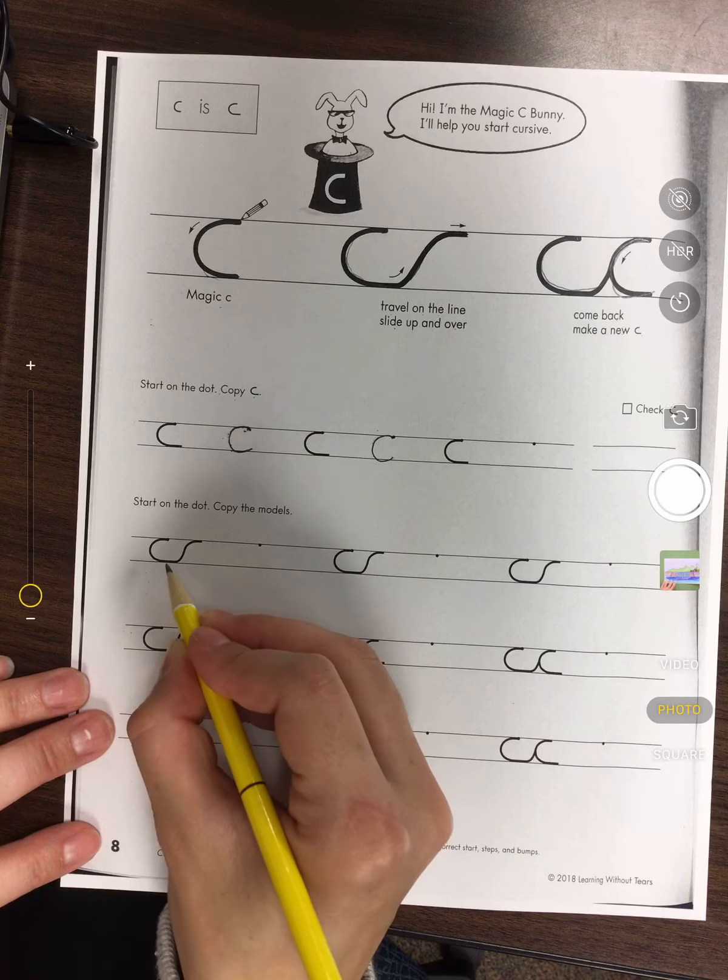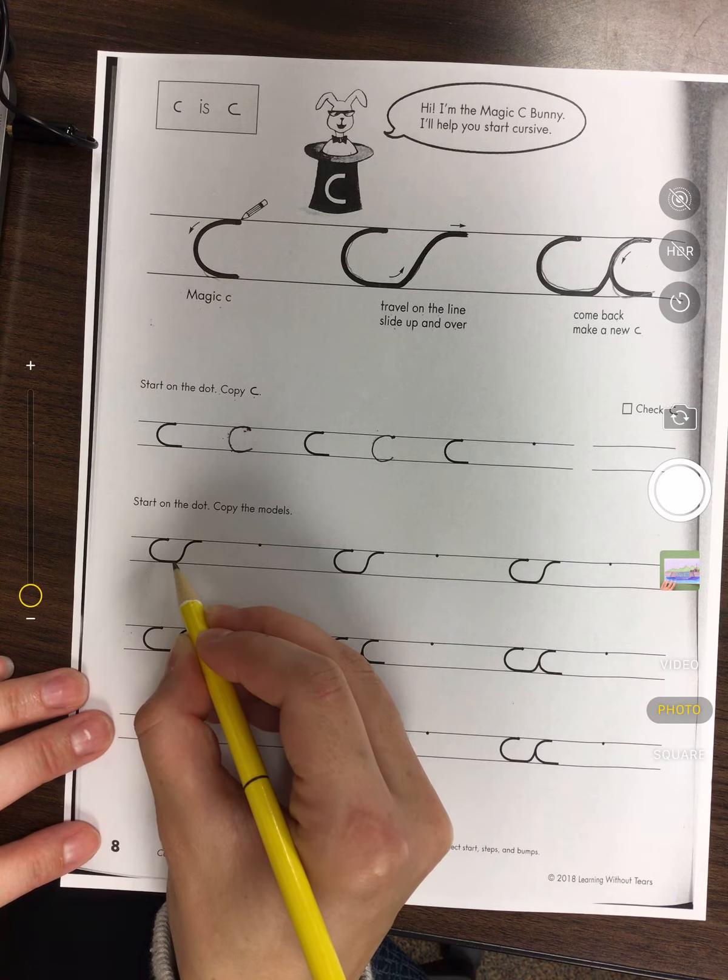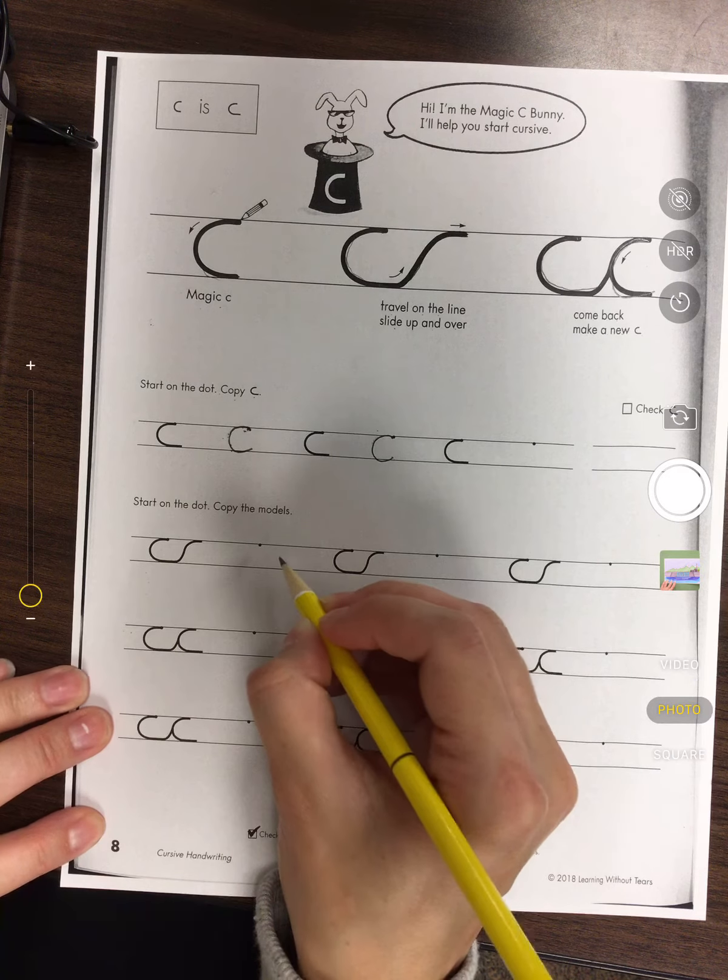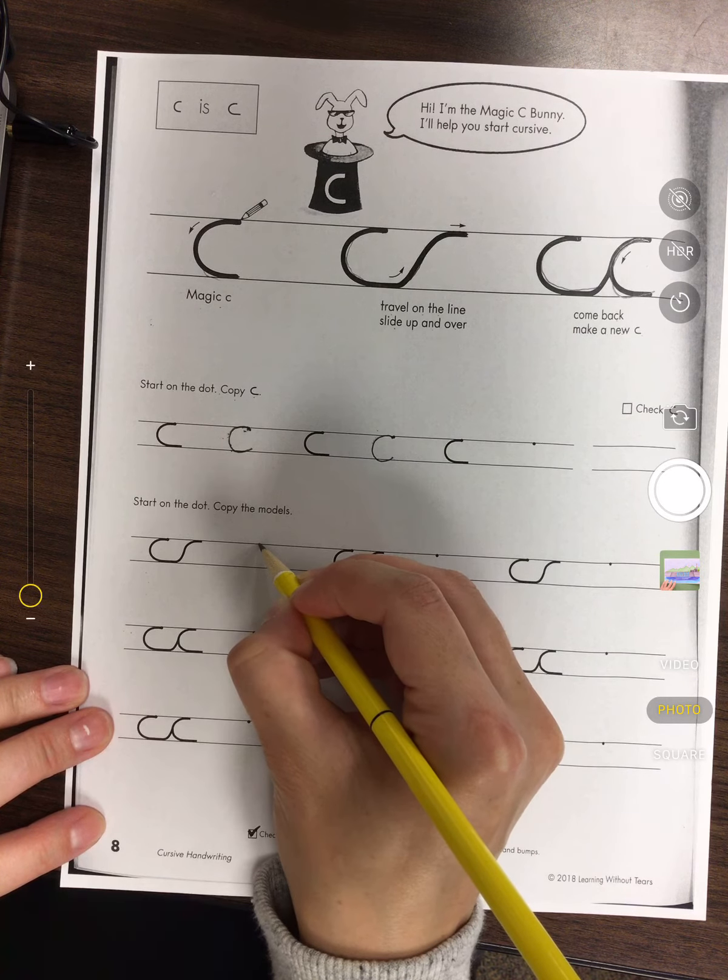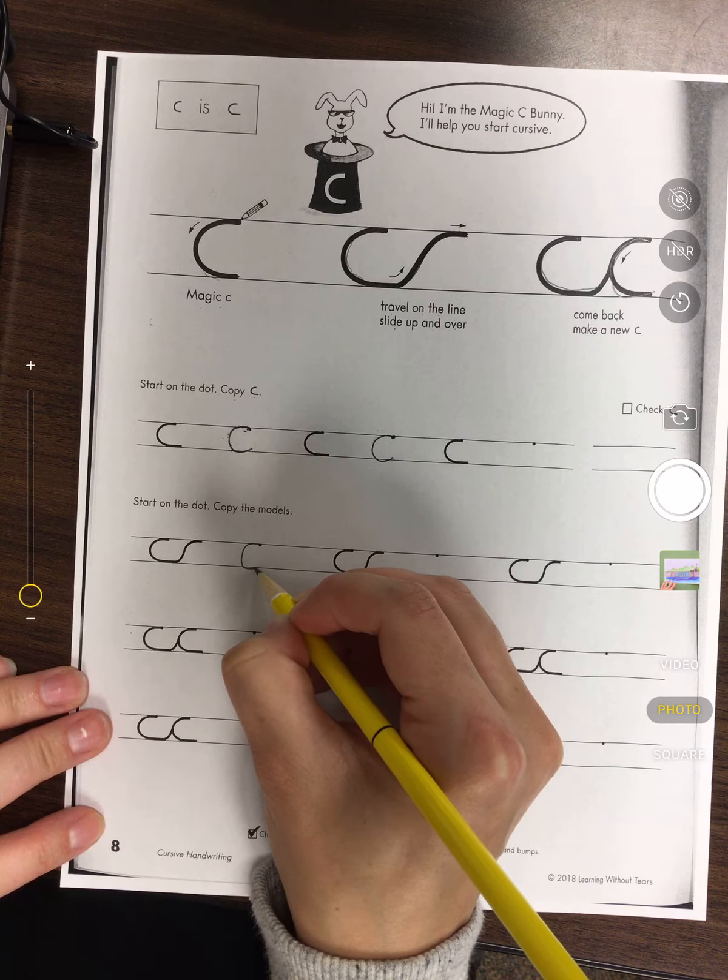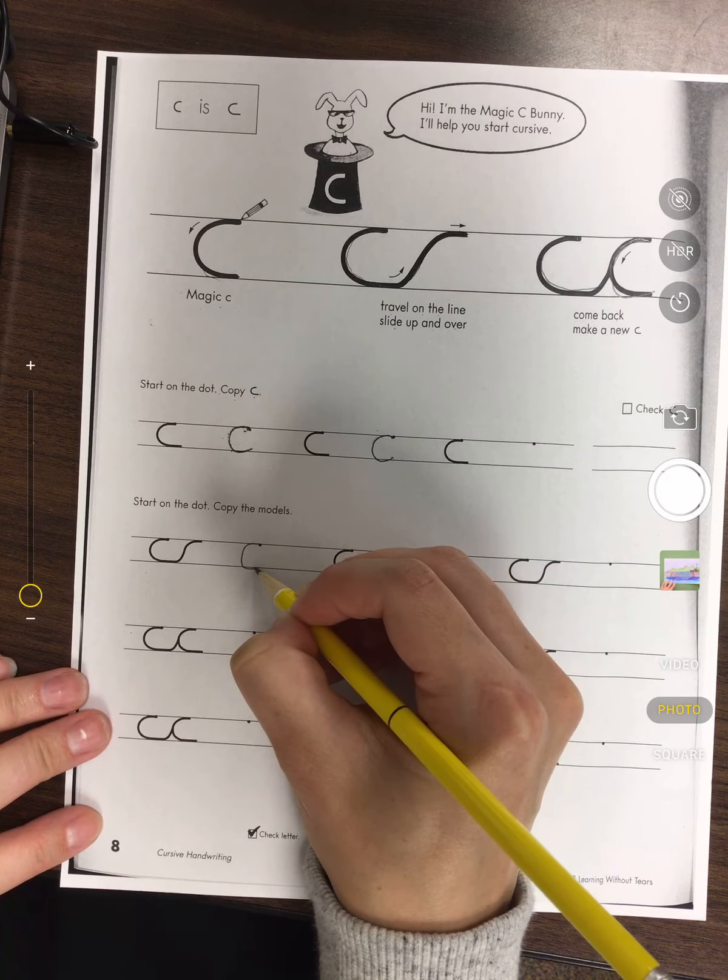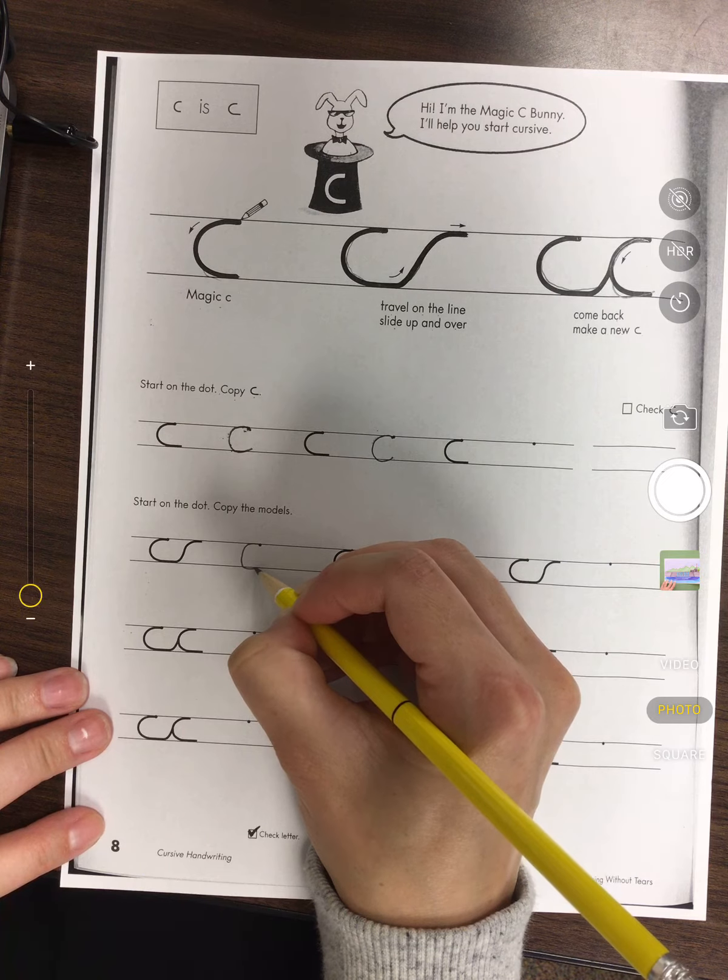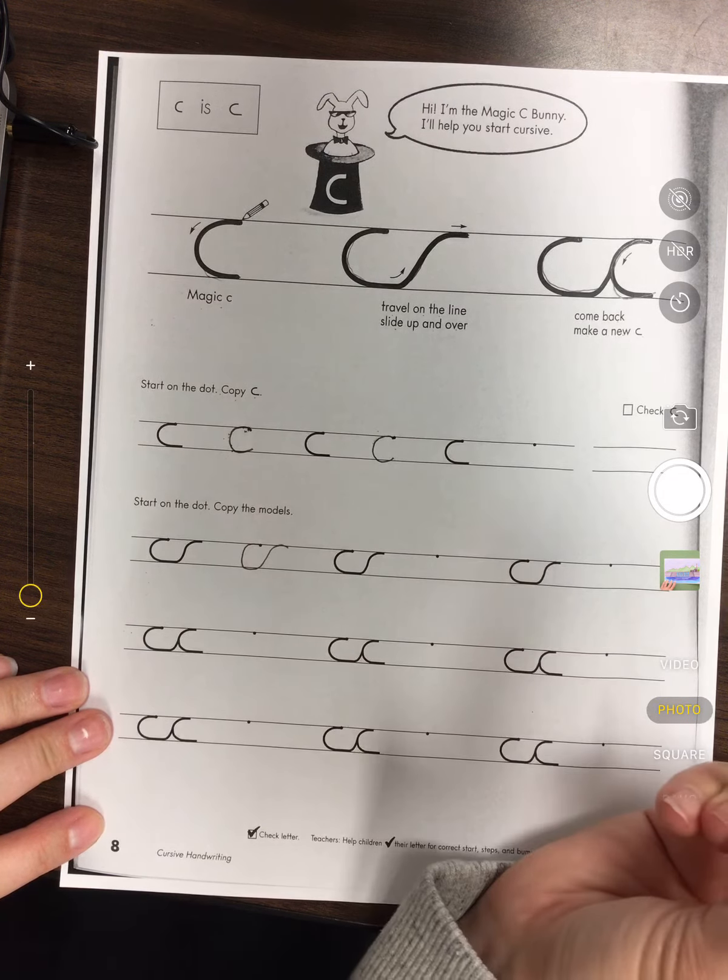All right, now I'm gonna show you how to copy this model. So we want to make a C. And remember, don't pick up your pencil because in cursive we do not pick up our pencil. So we're gonna come all the way up like that.